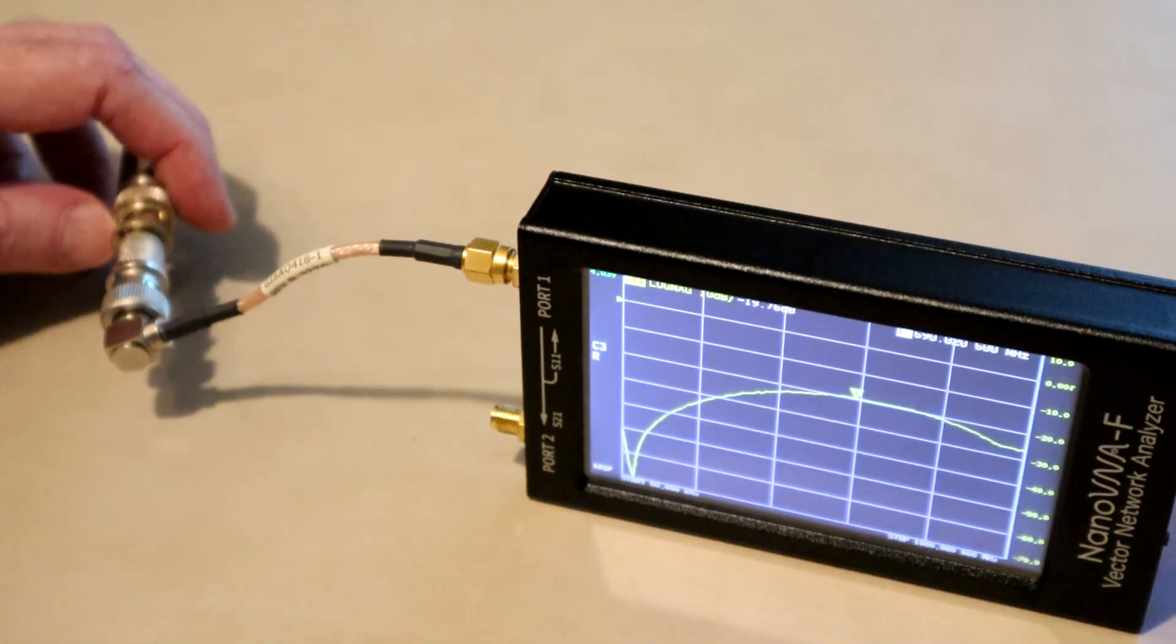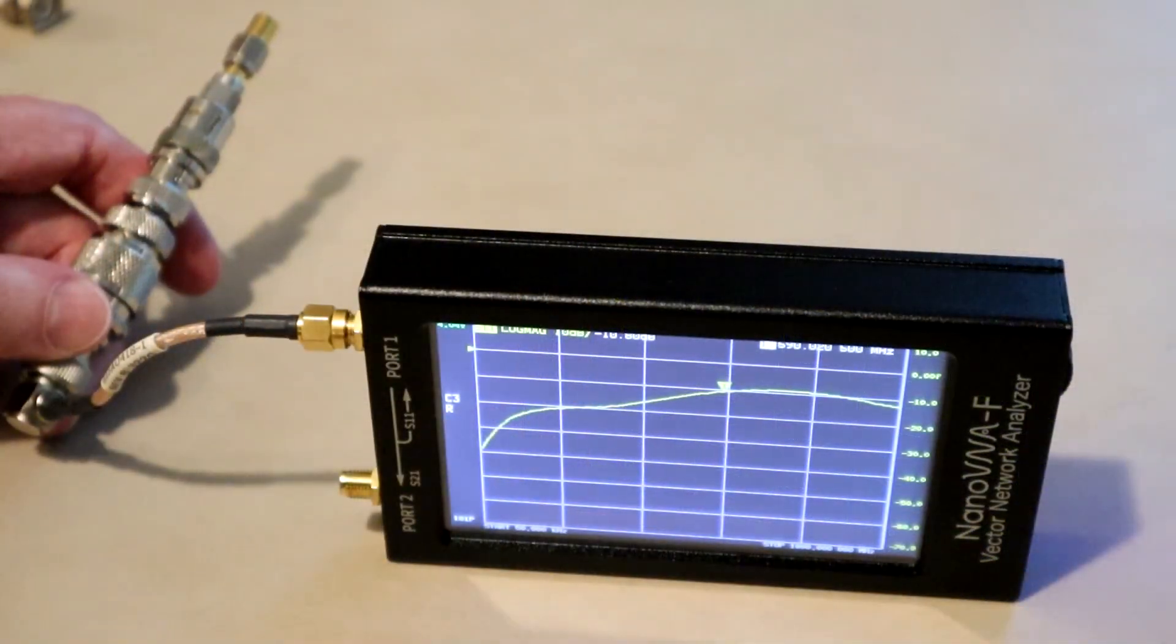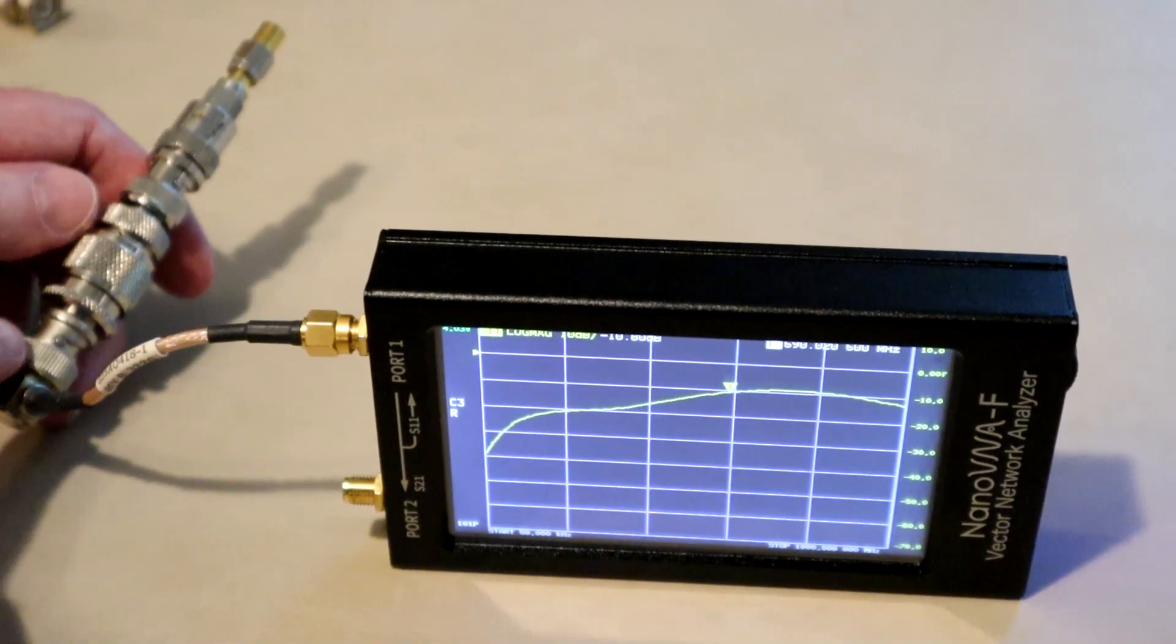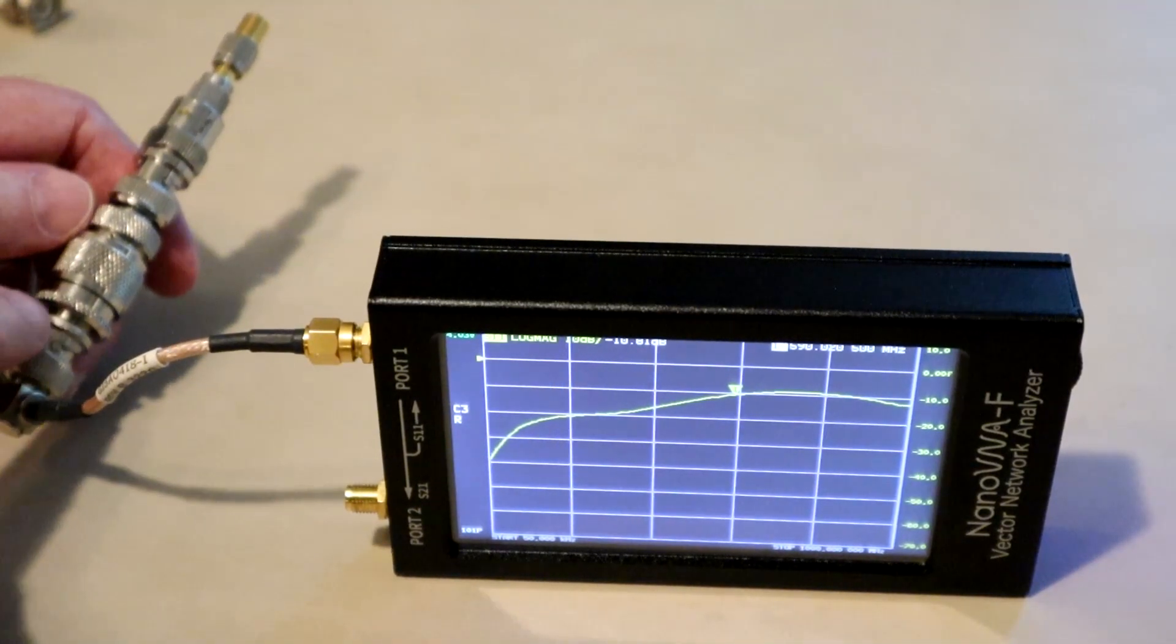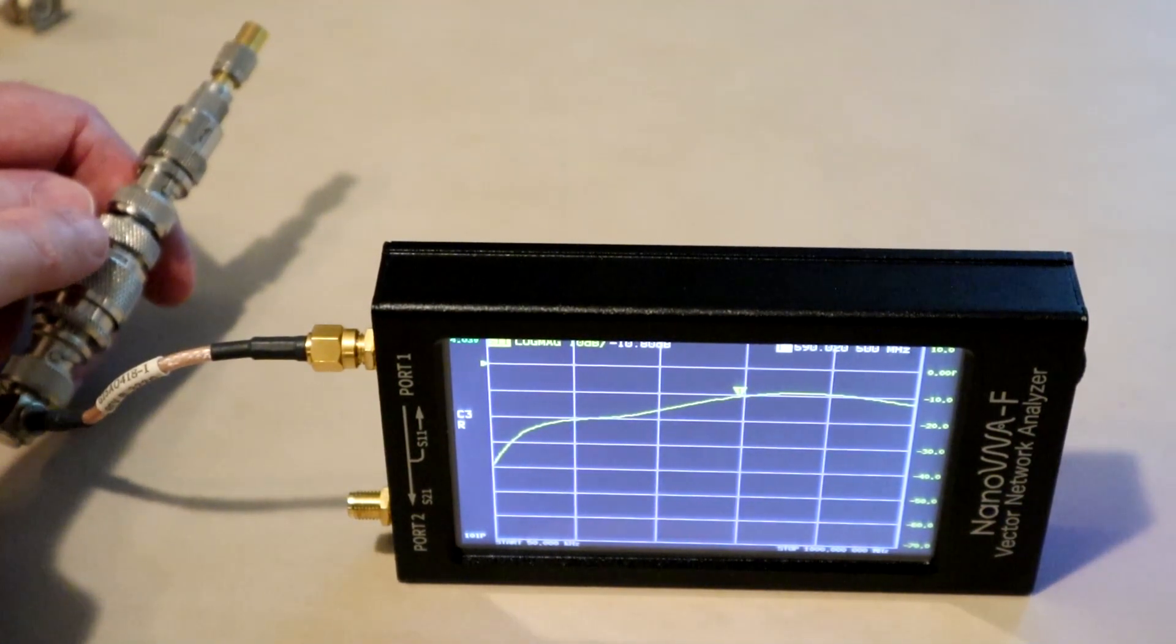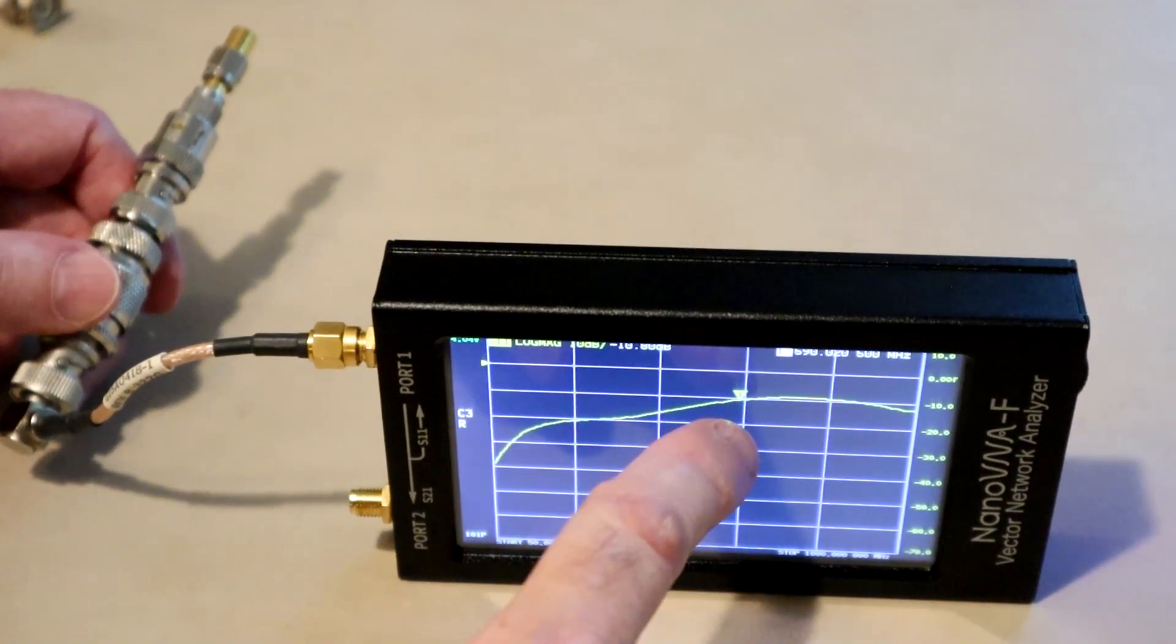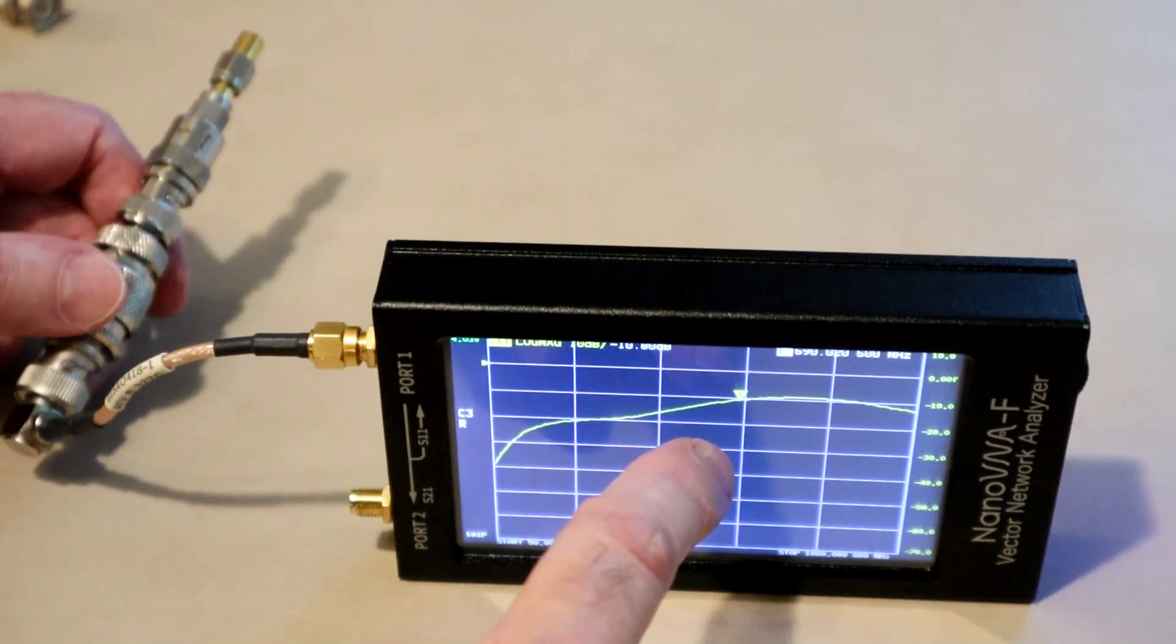Is it the PL259 SO239 UHF connector interface? Probably not. Here I've taken the BNC connector and gone through a number of adapters here to get to the SMA. But one of those adapters contains the PL259 piece here and SO239 there. And so now we're measuring through one of those interfaces to a very good load. And what we see at 590 megahertz is about minus 11 dB. So not the 0 dB that we were seeing on the 1.5 kilowatt dummy load.